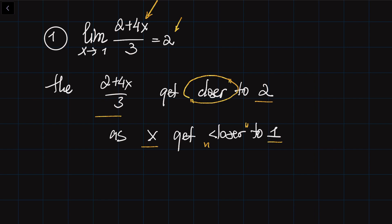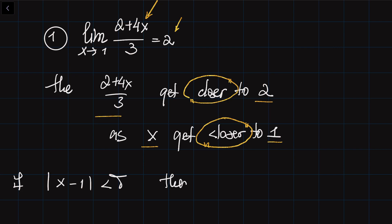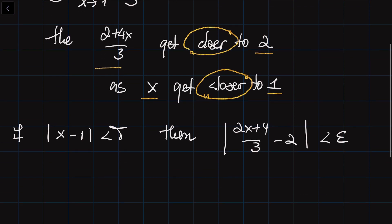We are going to control the distance between the function and its limit by controlling the distance between x and 1. It basically tells you that if the distance between x and 1 is smaller than some delta, then the distance between (2x+4)/3 and 2 is becoming smaller than epsilon. There is a relationship between delta and epsilon — they are essentially connected. By controlling the distance between x and 1, I can really control the distance between the function and its limit.